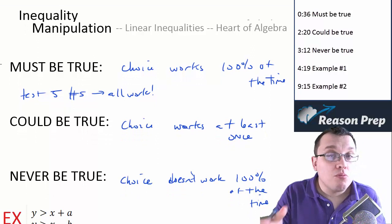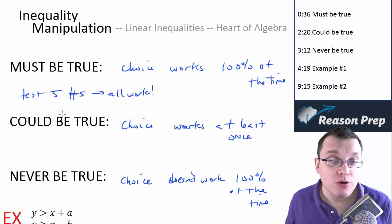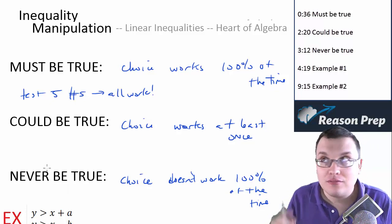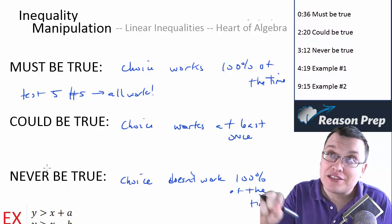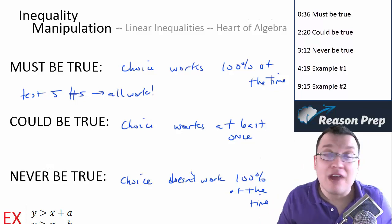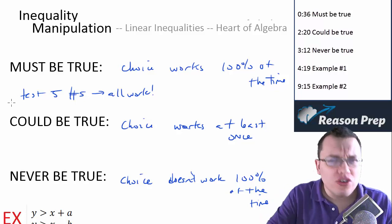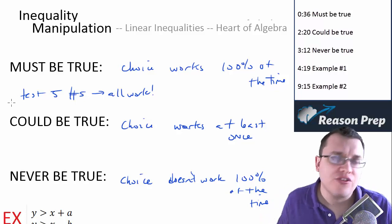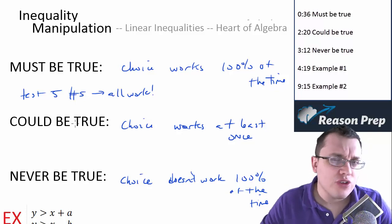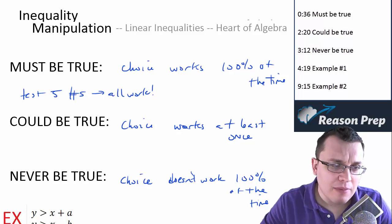If you're plugging in points for a never-be-true question and you find a point that works in that choice, you can get rid of it because you've just proven it could be true — and therefore 'never be true' is incorrect. It's very hard to talk about this abstractly. We will see examples, so if this was a little confusing, come back to it after you've seen some questions and it might make more sense.